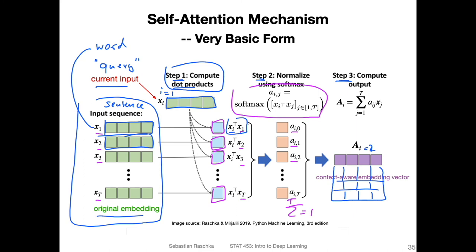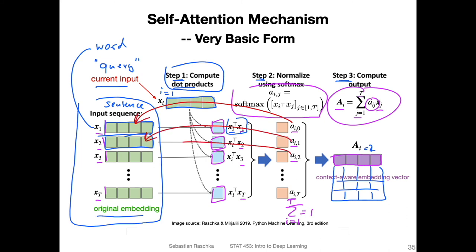Then we sum them up to get the attention values, which is a vector, because x_j is a vector. We go from x_j to x_T, over all the inputs — weighting each input by its corresponding attention weight a, summing all weighted inputs together. This gives us a vector.